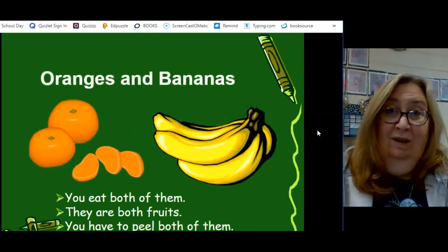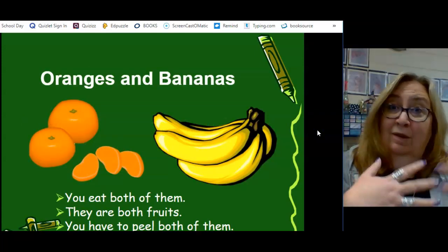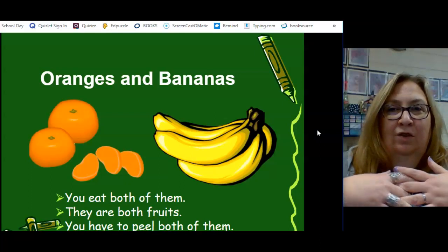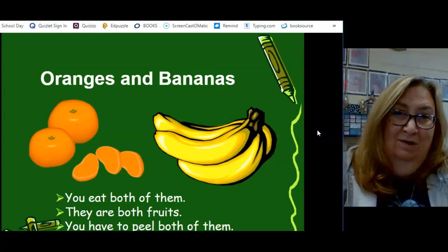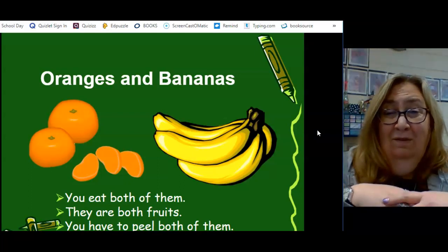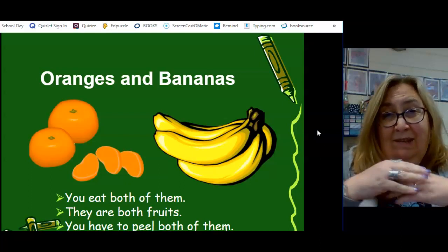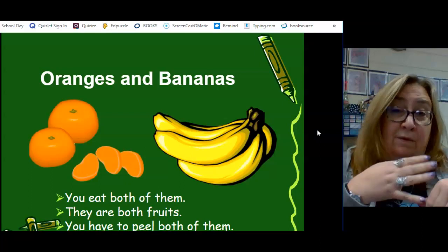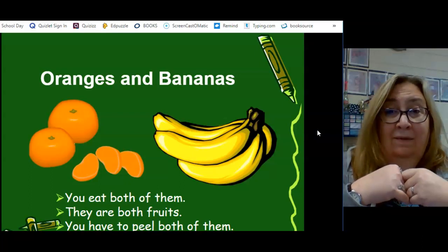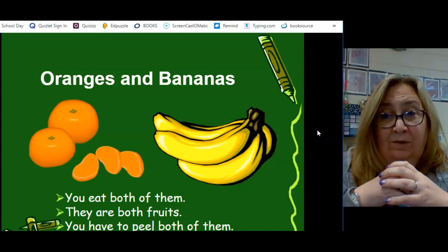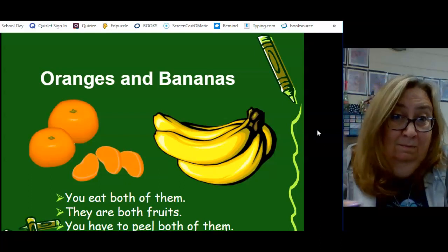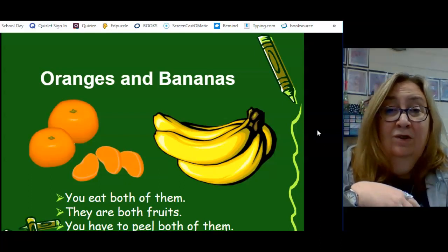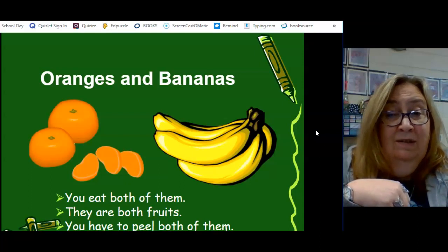Let's look at, we can also just compare two things. So, we need to look at oranges and bananas, which if you look at the picture, they don't look very much alike. So, we have to kind of scratch our heads and think, how are these things the same? Well, we eat both of them. There's one. They're both fruits. There's two. And to eat them, you have to peel them, each of them. So, that's three specific ways they are the same.